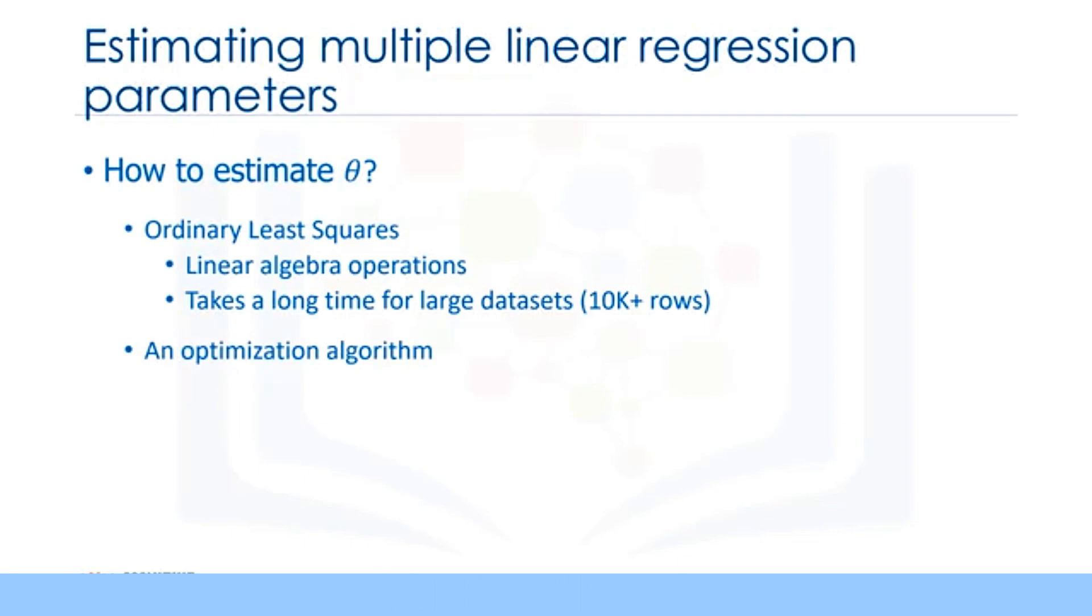The second option is to use an optimization algorithm to find the best parameters. That is, you can use a process of optimizing the values of the coefficients by iteratively minimizing the error of the model on your training data. For example, you can use gradient descent, which starts optimization with random values for each coefficient, then calculates the errors and tries to minimize it through wise changing of the coefficients in multiple iterations. Gradient descent is a proper approach if you have a large dataset. Please understand, however, that there are other approaches to estimate the parameters of the multiple linear regression that you can explore on your own.